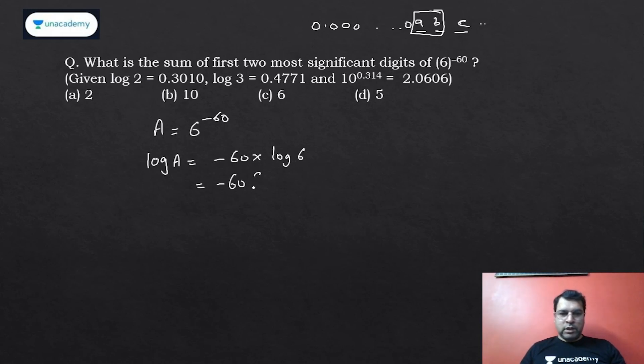Which equals -60 × (log 2 + log 3). I'm taking log base 10. So log 2 + log 3 will be 0.3010 + 0.4771 = 0.7781. So -60 × 0.7781, when we multiply, gives us -46.6860.